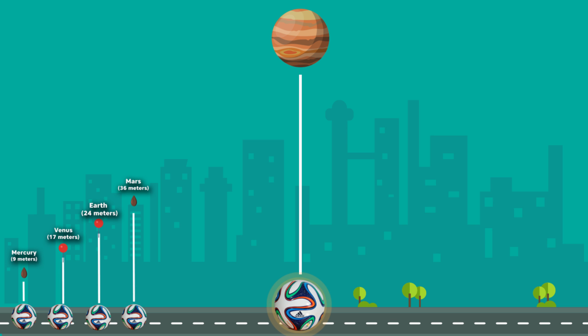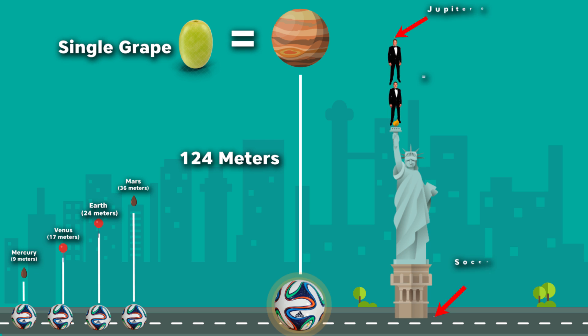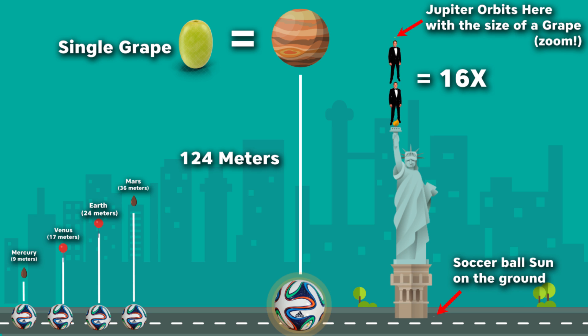After we go through the asteroid belt easily, there is the gas giant Jupiter. Jupiter is 124 meters away from our soccer ball sun with the scaled size of a single grape. It's like if you put a ball on the bottom of the Statue of Liberty plus 16 Elon Musks stacked one on top of another. That's where Jupiter is, with the real distance and scaled size of a mere grape.